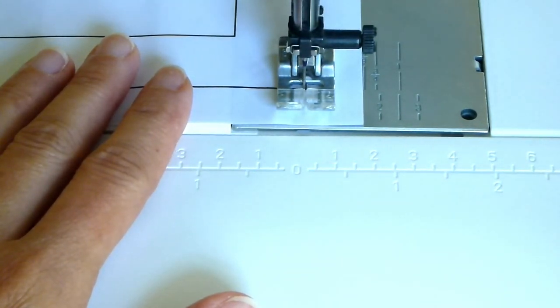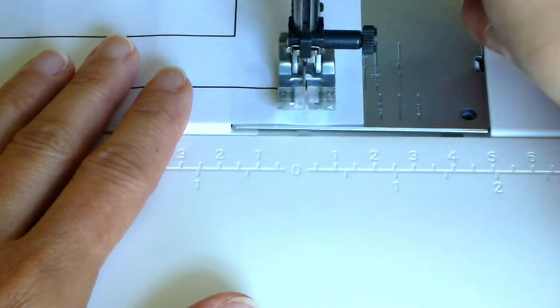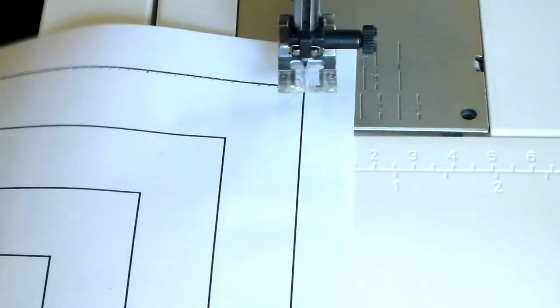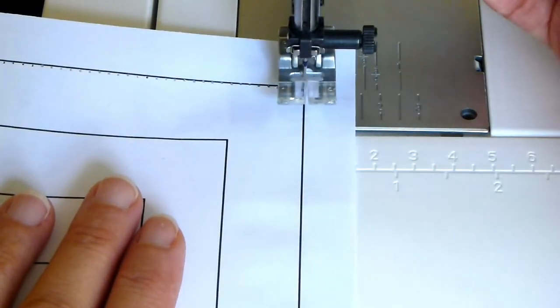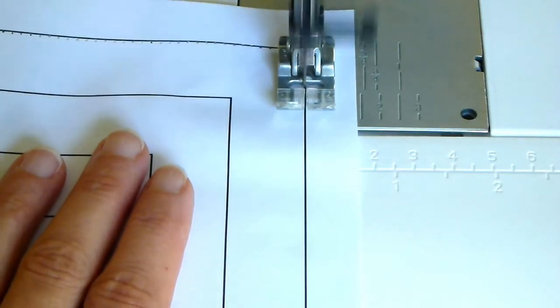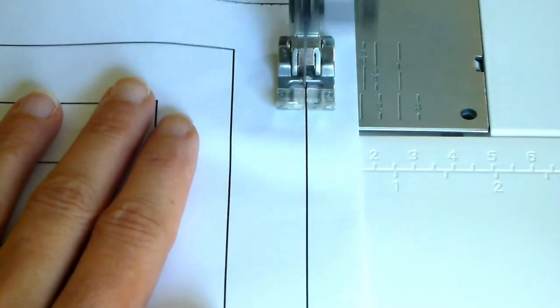Leaving the needle down in the paper, lift the presser foot up and rotate the paper to make the turn. Put your presser foot back down and sew forward again, repeating the process at each corner.